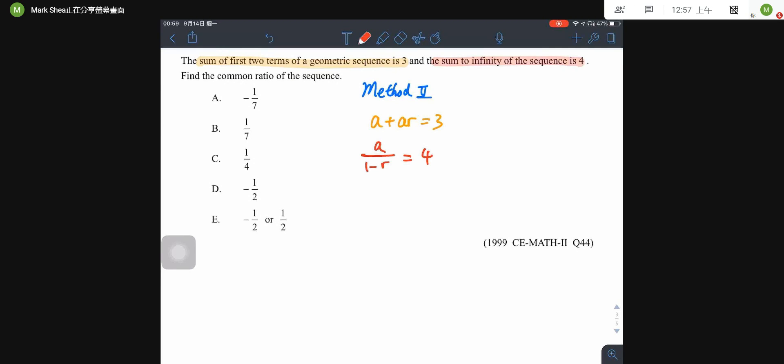Now, from equation 1, let me simplify it first. I have a times 1 plus r equal to 3. So, we got formula 3. And I use formula 3 divided by formula 2. Then, for the left-hand side, it will be a times 1 plus r divided by a over 1 minus r, and it is 3 divided by 4. This is the left-hand side of the equation, and it will be 3 over 4.